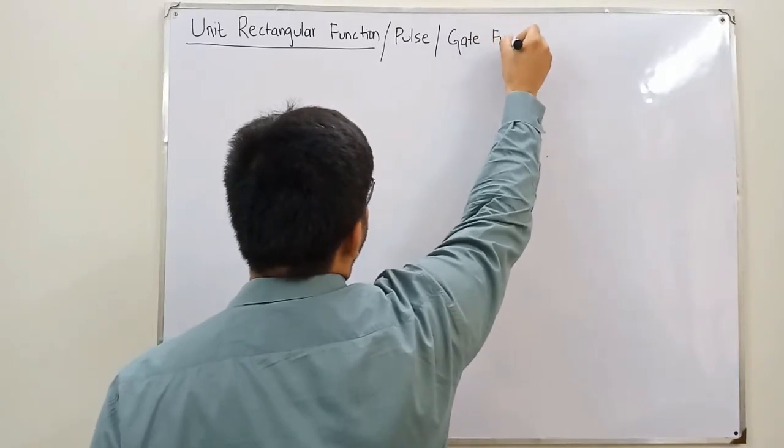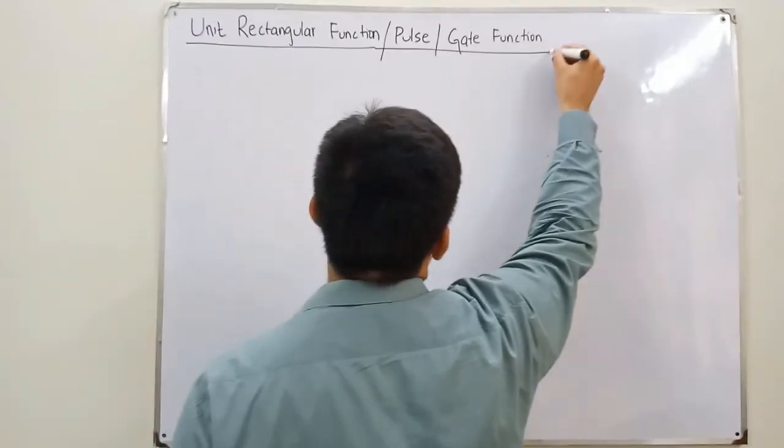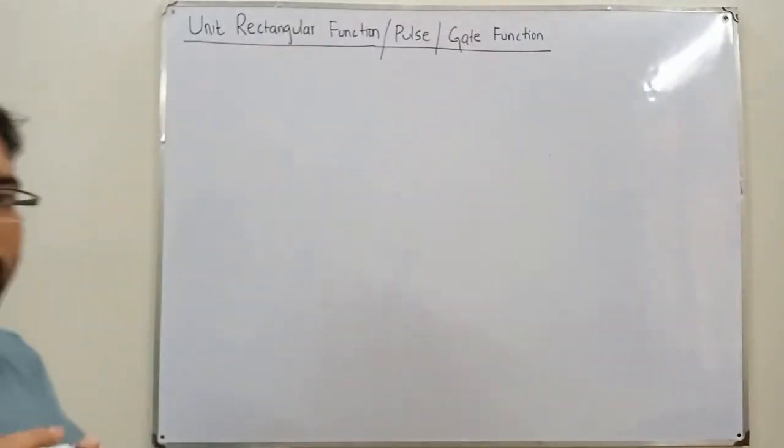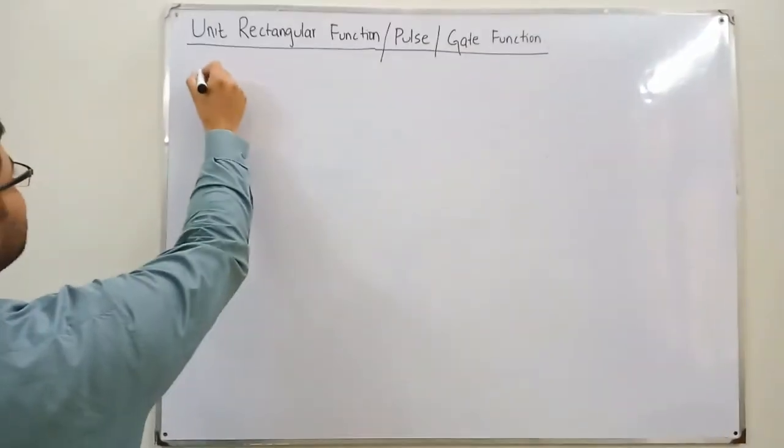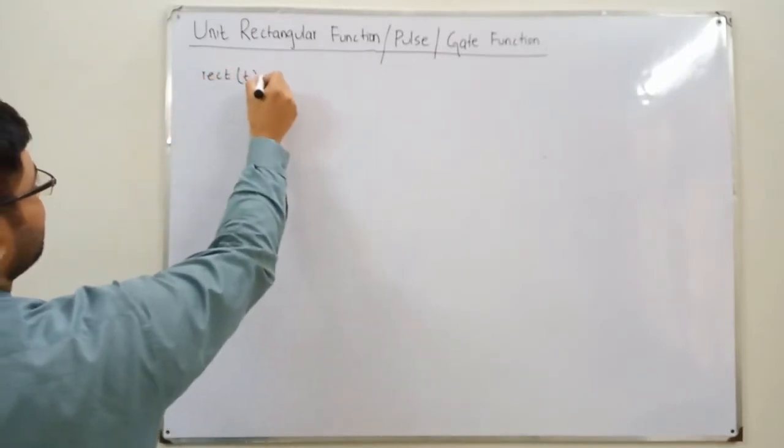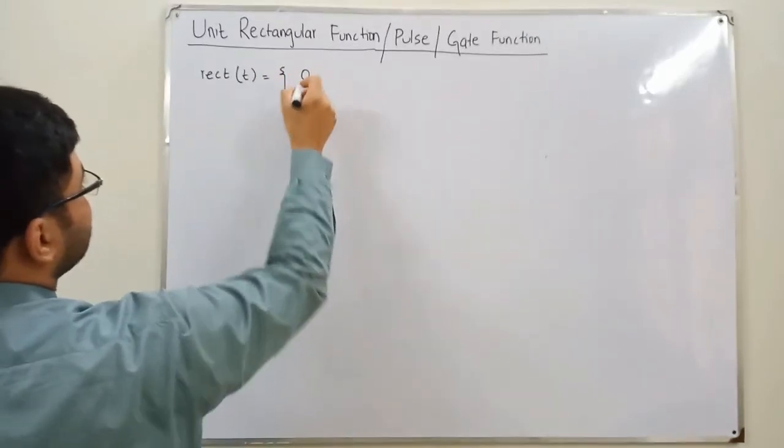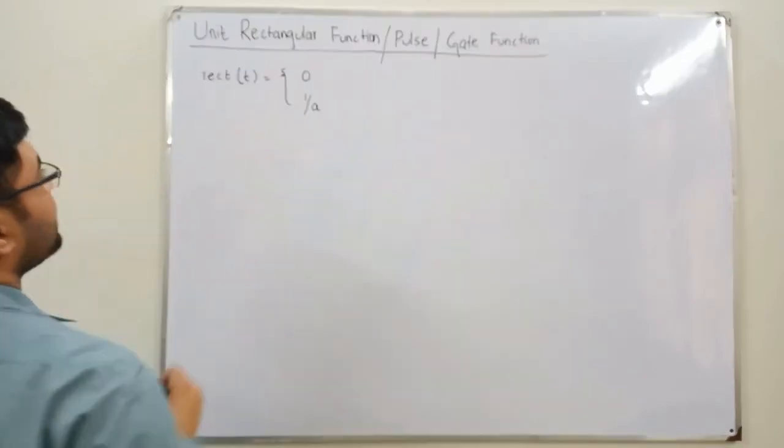Gate function. Now in this video, we have a particular limit of time, and within that range we have the values. Let me write it for you. The representation is rect of t. This is equal to 0 in a particular limit, and it is equal to 1 over a in a particular limit.